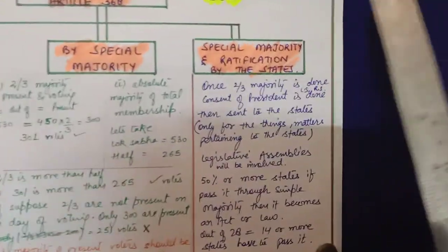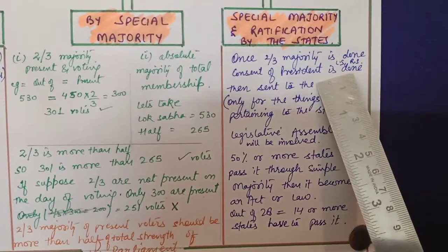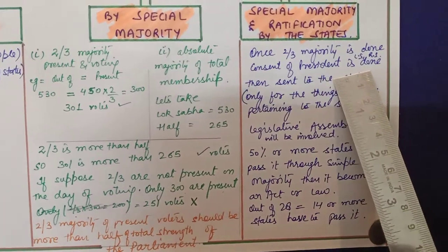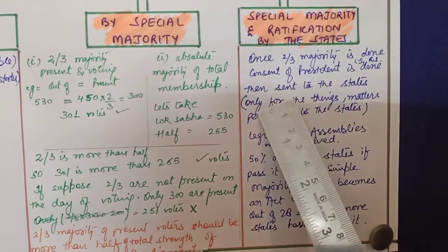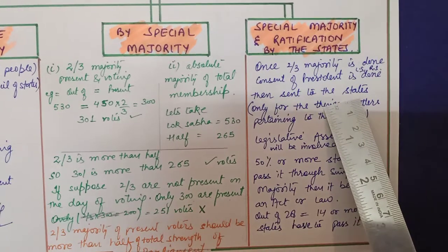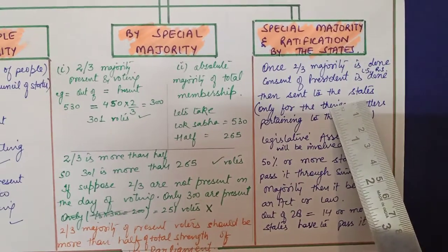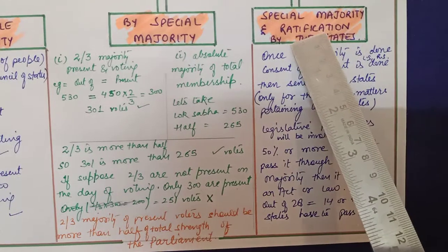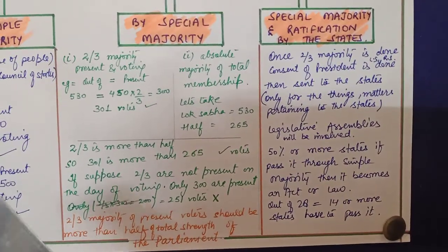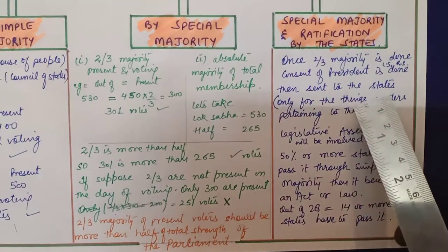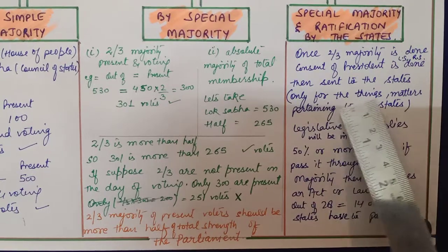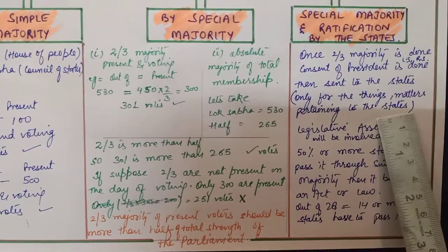Once two-third majority is done by Lok Sabha and Rajya Sabha, and even the consent of the President is done, then it is sent to the states for their consent, verification, ratification, and for them to accept it. But only then, if only those matters will be sent which are pertaining to the states.